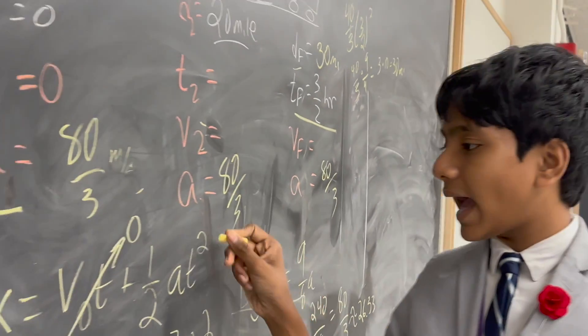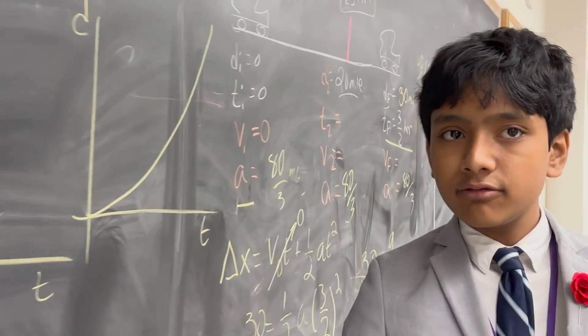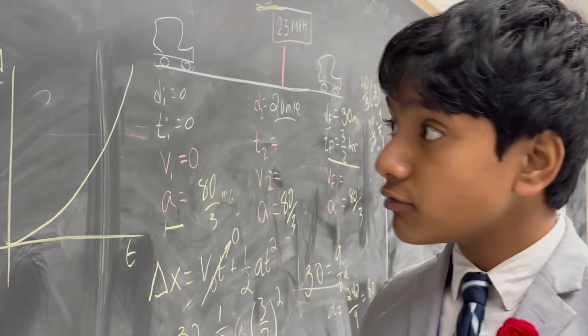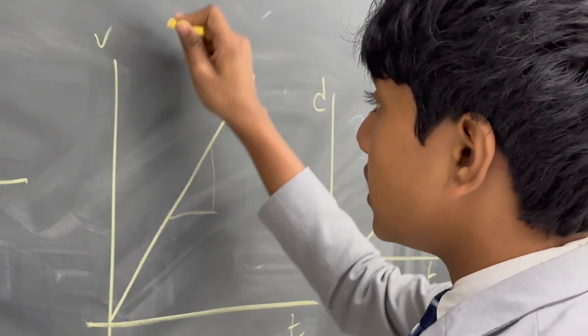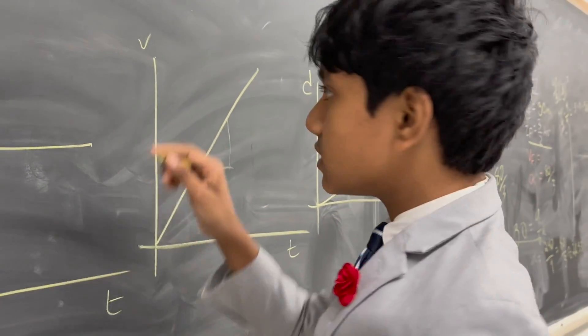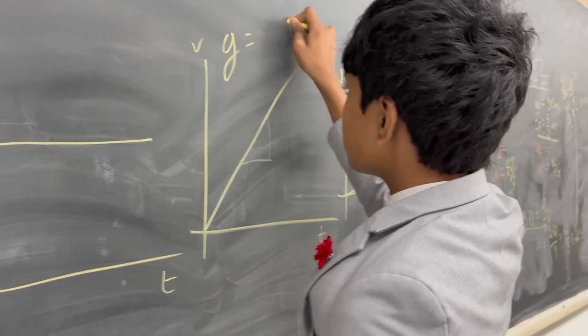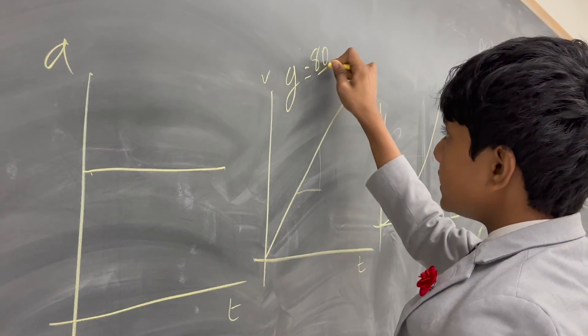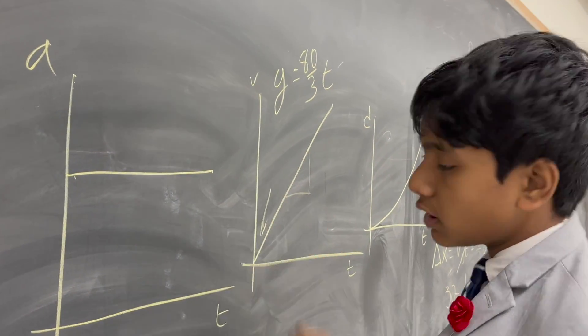And here's the thing. Since the acceleration is constant, and we know the acceleration, now we know the rate of change of velocity. The slope of the velocity graph is just acceleration, which means that we know this is just 80 over 3t, but no y-intercept, since we know it starts at 0.